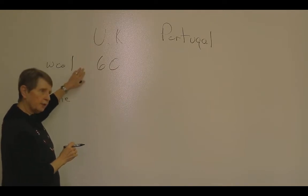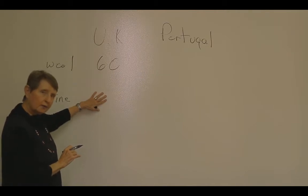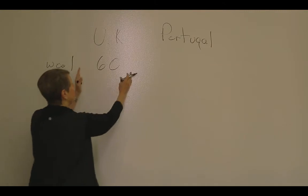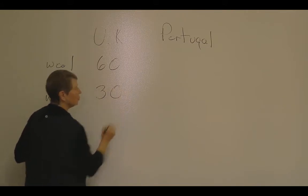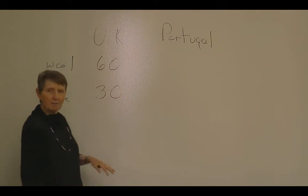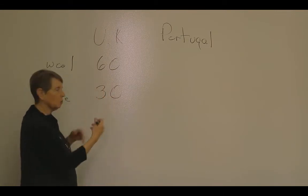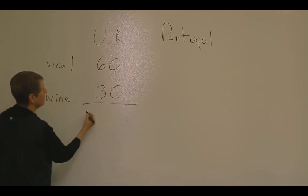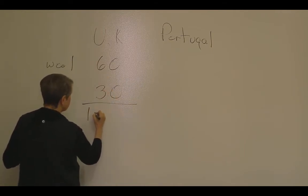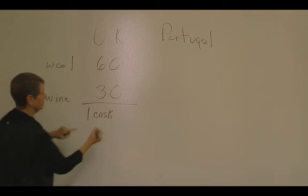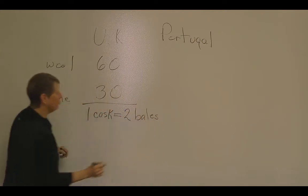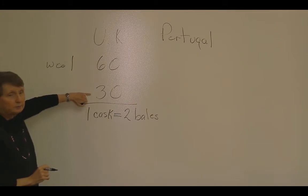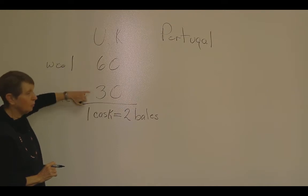If instead we put that worker in the wine industry working full time, at the end of the given time period, that worker would produce 30 casks of wine. We don't have any money in these economies, so we're going to price wool and wine in terms of one another. This means that one cask of wine costs two bales of wool — we're giving up the opportunity to make two bales of wool to get one cask of wine.